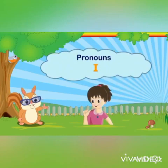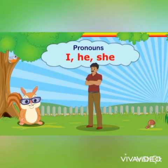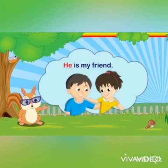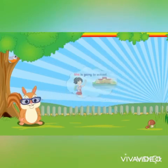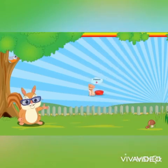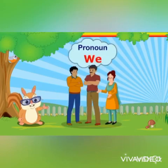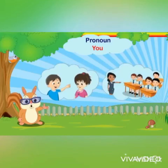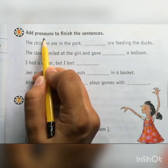Pronouns like I, he, and she are used for a single person. For example: I am reading a book — here 'I' is a pronoun. He is my friend — here 'he' is a pronoun. She is going to school — here 'she' is a pronoun. The pronoun 'it' is used for animals; for example: it gives us milk. The pronoun 'we' is used when there are more than two persons, and 'you' is used when we are talking about some other person. So students, you have seen that pronouns are substitute words used in the place of a noun.